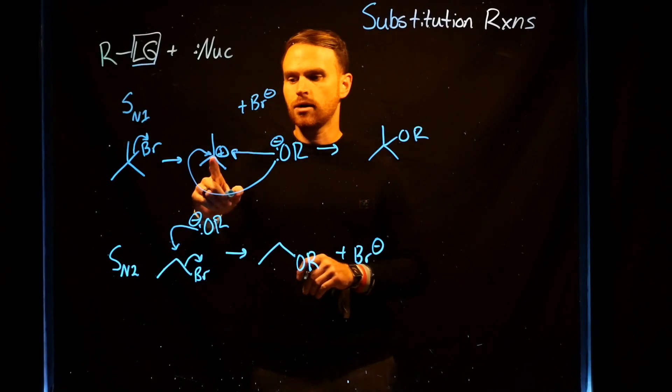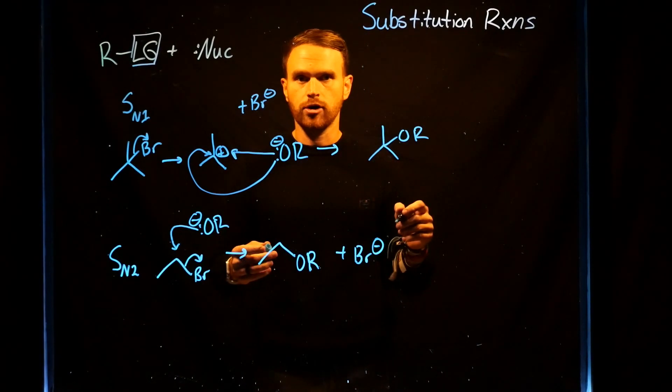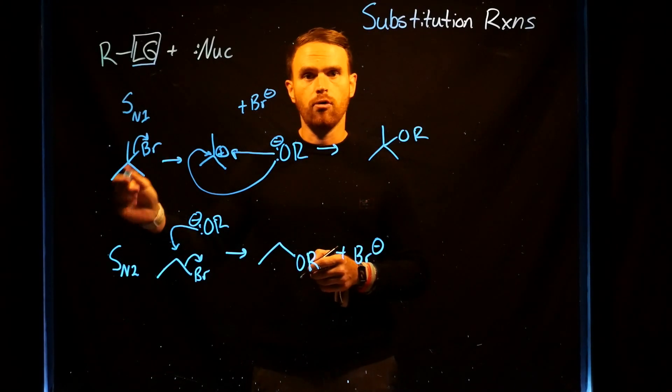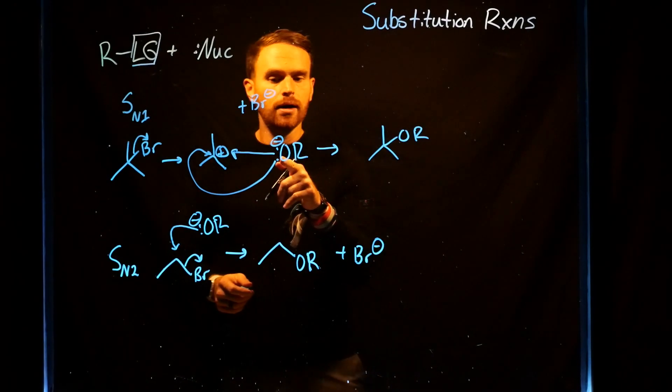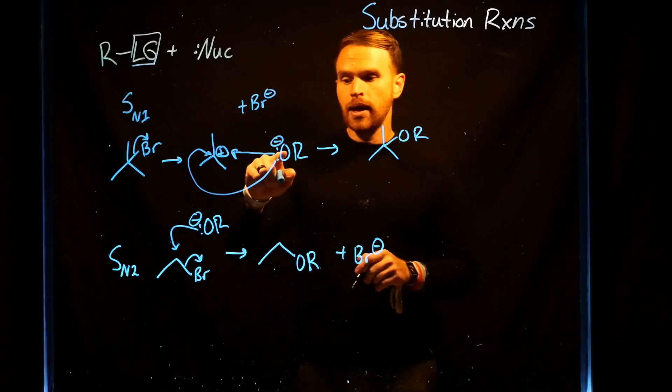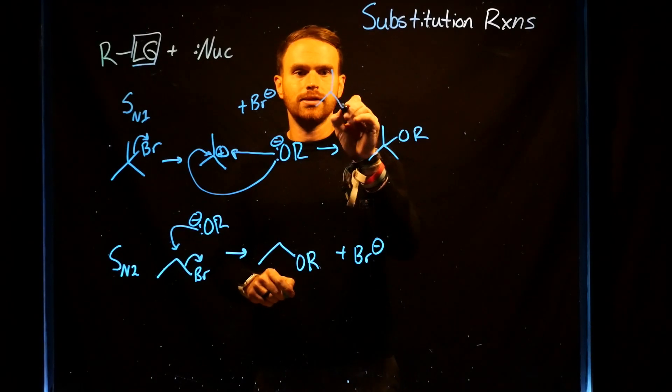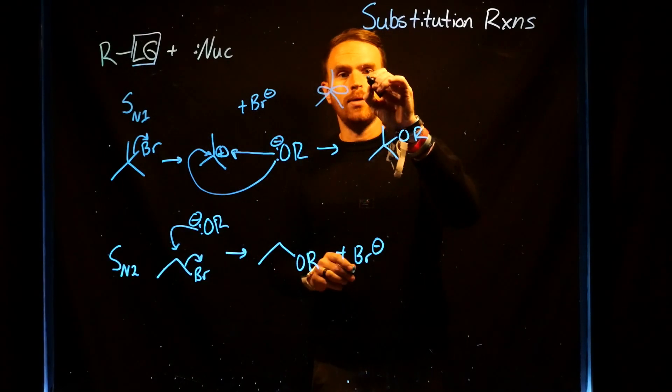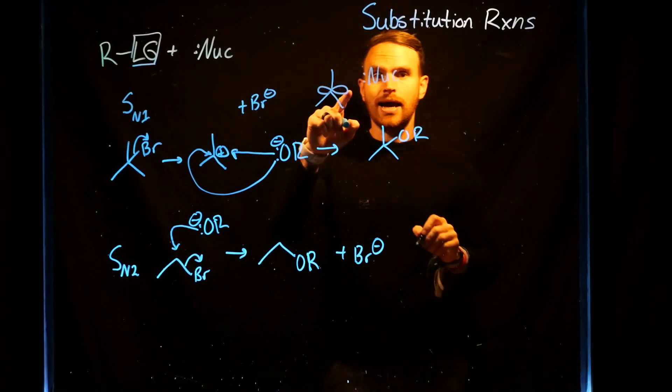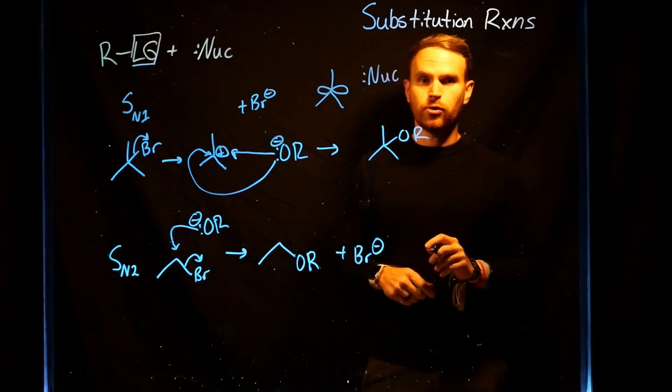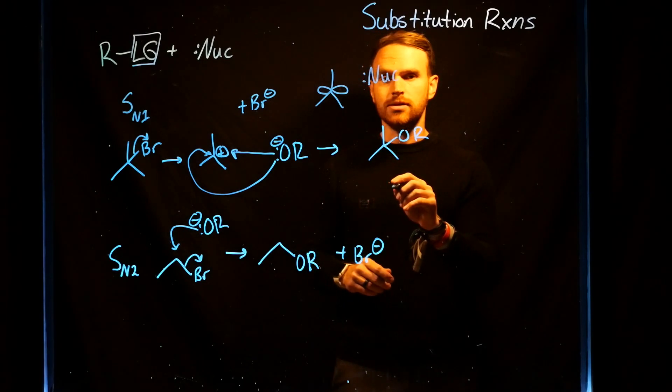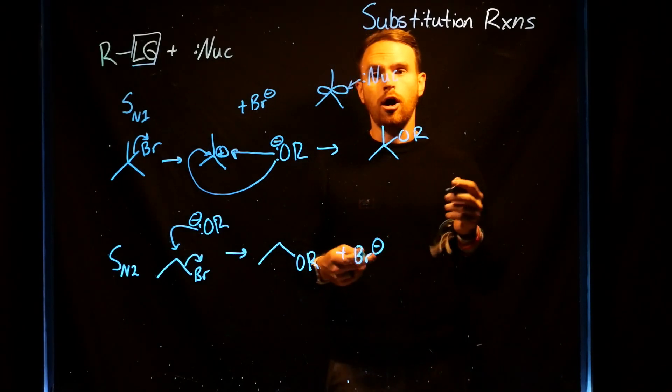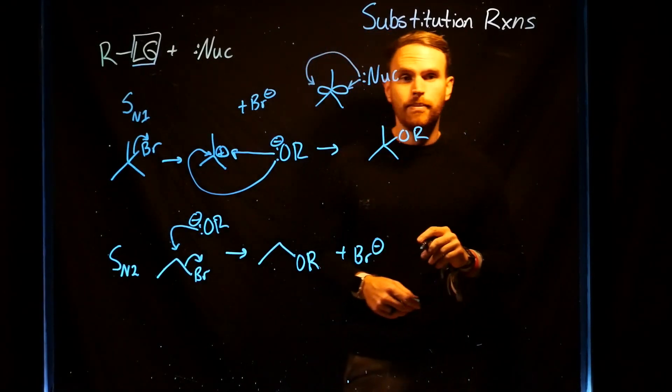Now, notice that the carbocation that gets formed is a tertiary carbon, which means that this originally could have been a stereocenter, meaning that it has either R or S stereochemistry. But because an SN1 reaction is occurring, what essentially happens is that you generate an empty P orbital that is where your carbocation is. When the nucleophile comes and attacks, it can attack either side of this P orbital. As a result, SN1 reactions end up generating racemic mixtures because both happen, where the nucleophile can come in on one side or just as likely come in via the other side.